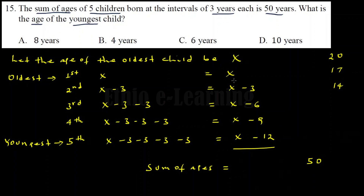Now, the sum of all five children's ages: x plus x minus 3, plus x minus 6, plus x minus 9, plus x minus 12. Combining the x terms gives us 5x.